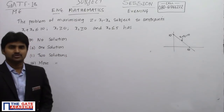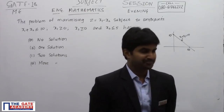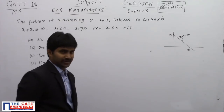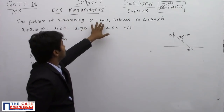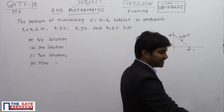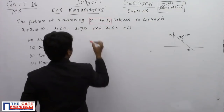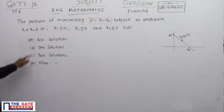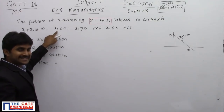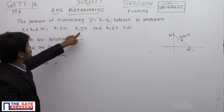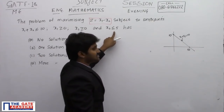Hello students. This particular question is from the Mechanical 2018 evening session. It's a very interesting question. The problem is maximizing z equal to x1 minus x2, subject to the constraints: x1 plus x2 less than or equal to 10, x1 greater than or equal to 0, x2 greater than or equal to 0, and x2 less than or equal to 5.